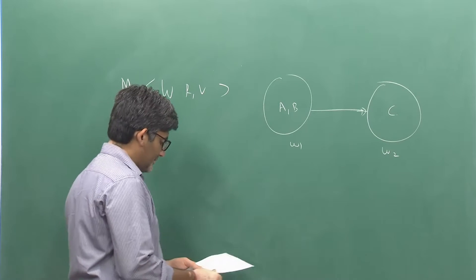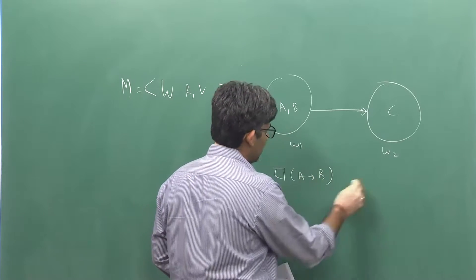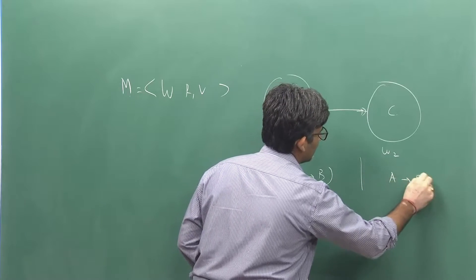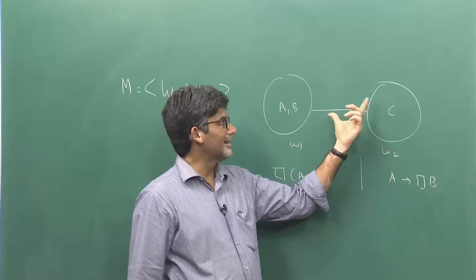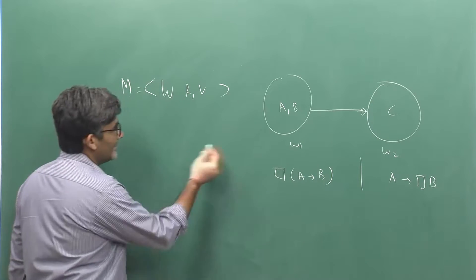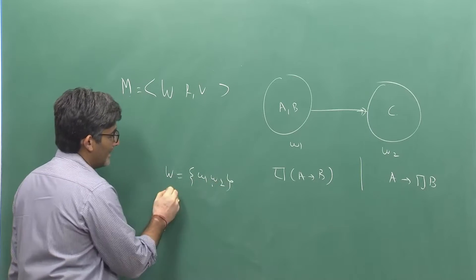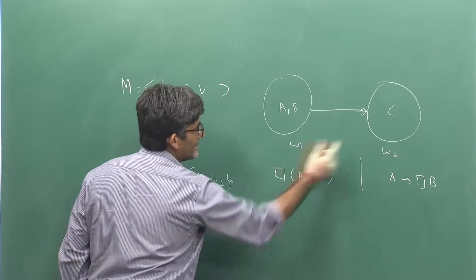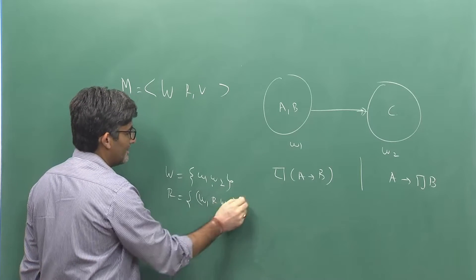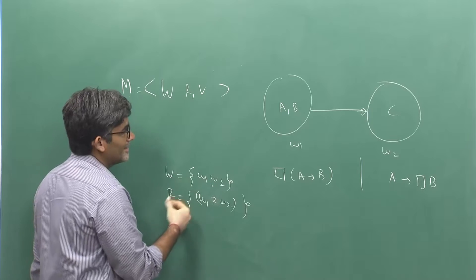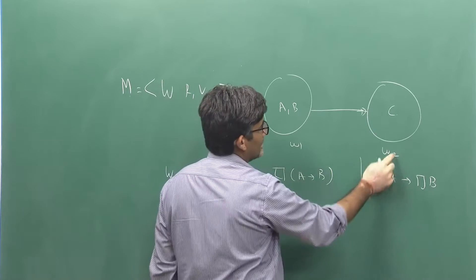We are trying to find out whether necessity of A implies B, and A implies necessity of B — which one is going to be true in this relational structure. Our set of worlds is W1 and W2. The accessibility relation has only W1 accessible to W2. The valuation function assigns A and B as true with respect to W1, and C as true with respect to W2.